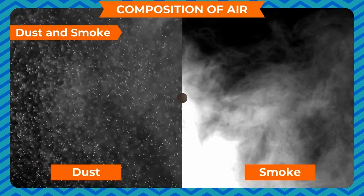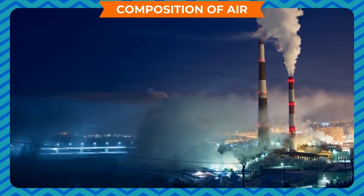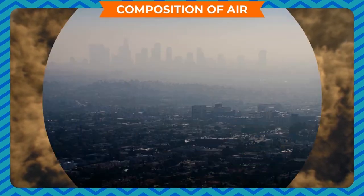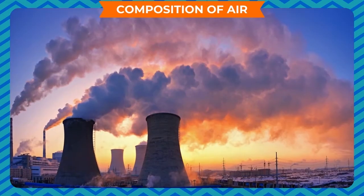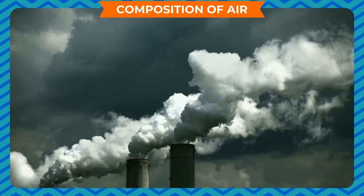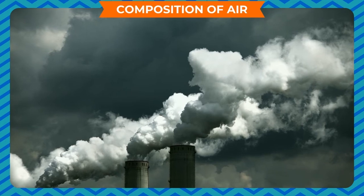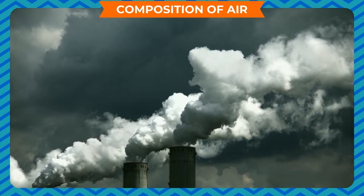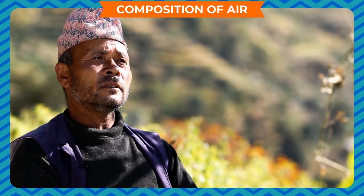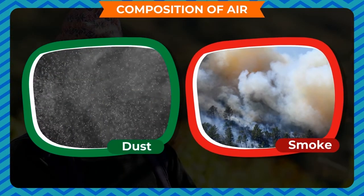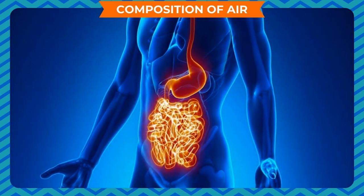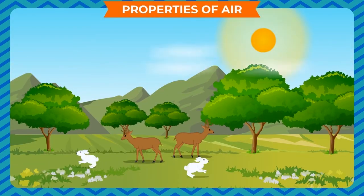Dust and smoke: burning of any material or fuel produces smoke. The smoke contains a few gases and dust particles that mix into the air and pollute it. That is why industries and factories in cities are established away from cities — the factories produce smoke through chimneys that directly mixes into the air outside the city, so the air inside the city is not polluted. Inhalation of dust and smoke particles causes many diseases and harms our immune system.